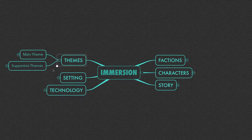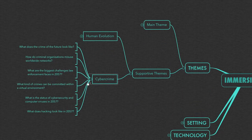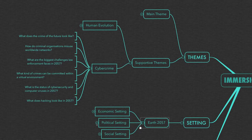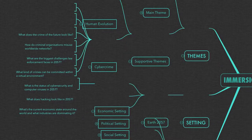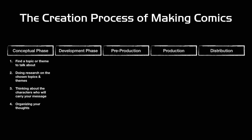Next is organizing your thoughts. All that research and those character ideas need to come together at some point. What I've used are mind maps — software like XMind or iThoughts — just mind mapping software in general. This gives you an overview of the whole process. Then the next step is testing the concepts. With all your concepts now in place, it's time to put them to the test.